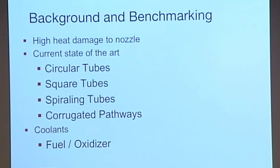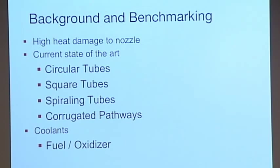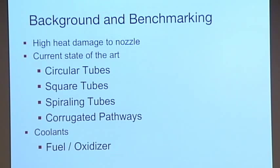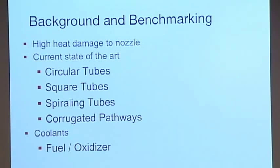Before designing, we looked into what already exists, and we found that there are four ways that people like to make regenerative cooling nozzles. The first one is circular tubes. So you can just imagine the nozzle and circular tubes that just run up and down the length of the nozzle. The next one is square tubes. And the idea with that is that there's more surface area closer to the hot wall on the inside, so it cools faster.